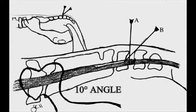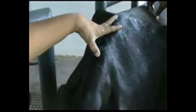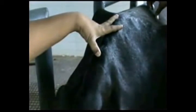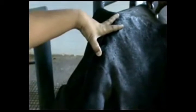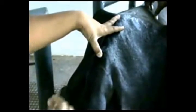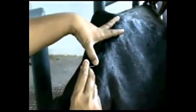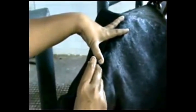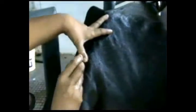Epidural needle insertion: The needle is introduced at a 10-degree angle caudally from the perpendicular until it strikes the bottom of the vertebral canal of the last sacral vertebra. When the needle contacts the floor of the vertebral canal, it is withdrawn about half a centimetre, so that the needle tip should then be in the epidural space of the neural canal.